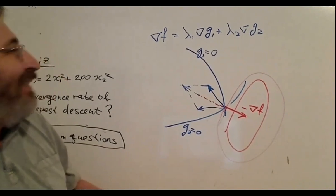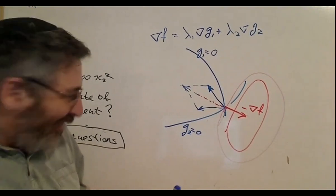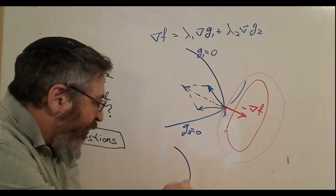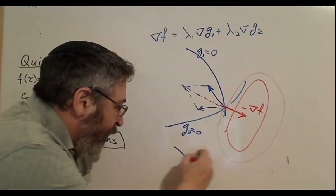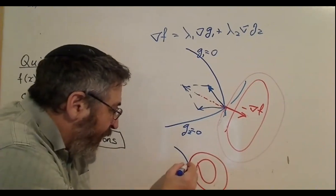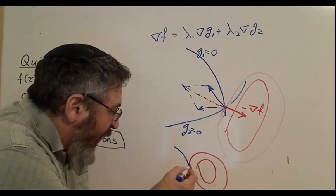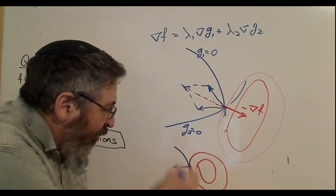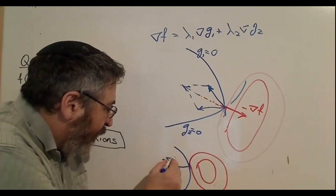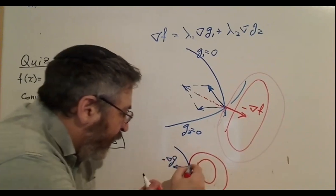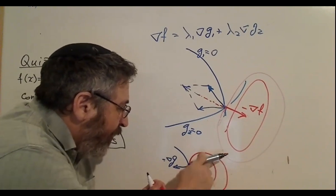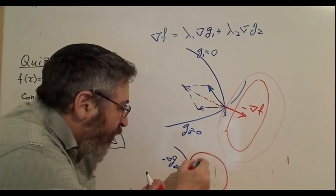For one constraint, the picture is simpler: the gradient is orthogonal to the tangent plane to the level line. Here is minus gradient of g and here is gradient of f, and they are collinear because those level lines are touching. This says that those two vectors are linearly dependent — one can be expressed as the other multiplied by a scalar with a minus sign. That is exactly why the equality holds.